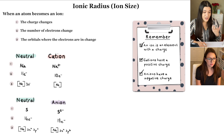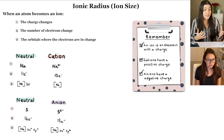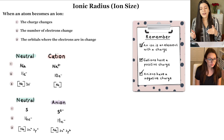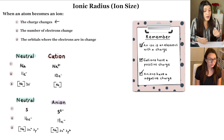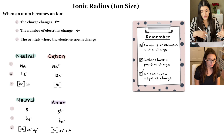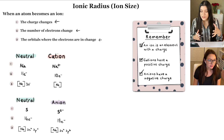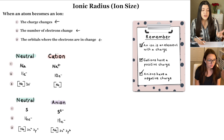We need to understand which ion is going to be larger. We're still looking at the size of the atom, but now the charge has changed — it's no longer neutral. Whenever an atom becomes an ion, the charge changes, the number of electrons changes, because we're actually either adding or subtracting electrons, and our orbitals where the electrons are located change as well.